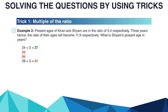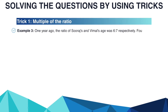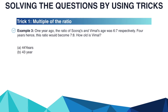Try to solve one more example by yourself. 1 year ago, the ratio of Suraj's and Vimal's age was 6 to 7. 4 years hence the ratio would become 7 to 8. How old is Vimal? Options are A: 44 years, B: 43 years, C: 49 years, D: 36 years.